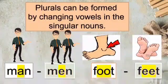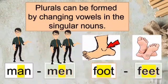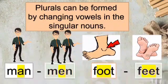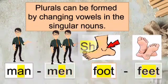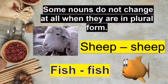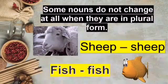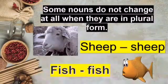A plural noun can also be formed by changing the vowel in the singular noun. For example, man becomes men, and foot becomes feet. Some nouns do not change at all in plural form — they are always the same. For example, sheep stays sheep, and fish stays fish.